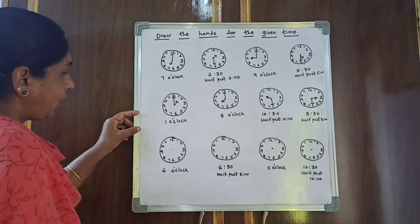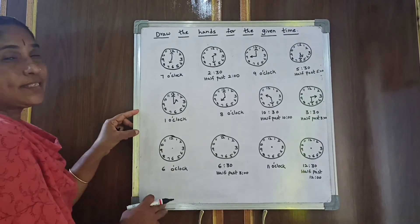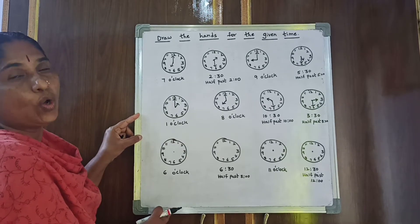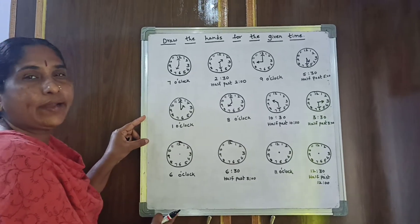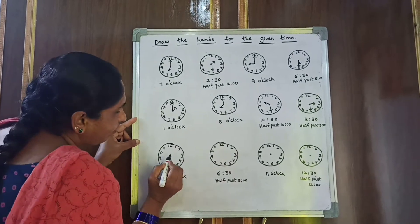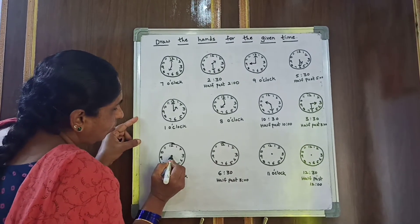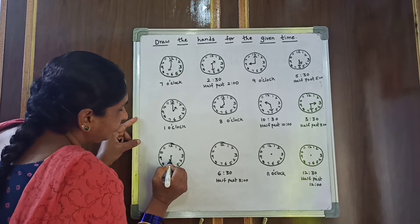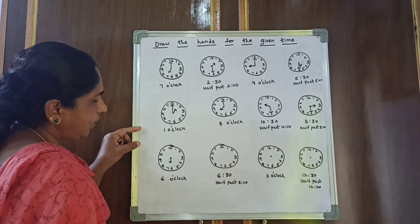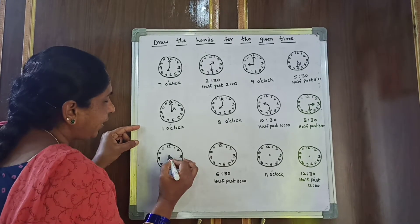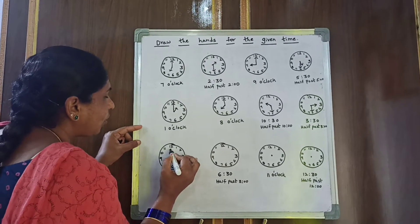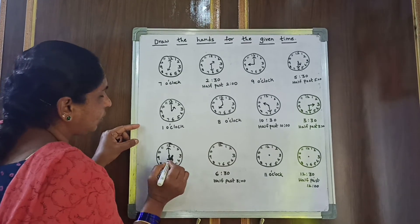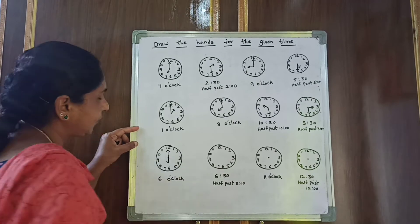Coming to the next one: 6 o'clock. 6 is the hour hand, or short hand. O'clock is the minute hand, or long hand. From the middle point, draw the short hand up to 6, and the long hand goes to 12. 6 o'clock.